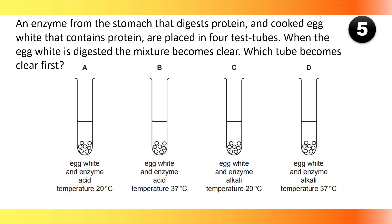An enzyme from the stomach that digests protein and cooked egg white that contains protein are placed in four test tubes. When the egg white is digested the mixture becomes clear. Which tube becomes clear first?